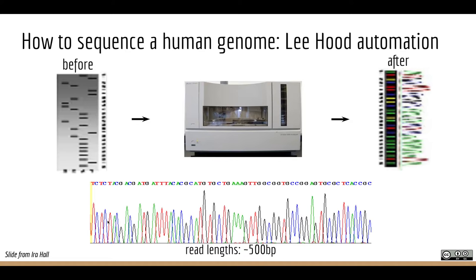The electrophoresis was done on a very thin capillary so that a laser could scan right along that filament — that's why it's known as capillary Sanger sequencing. This was state of the art basically until around when I started grad school in 2004.